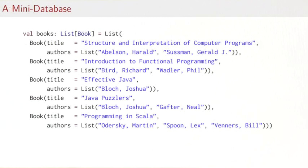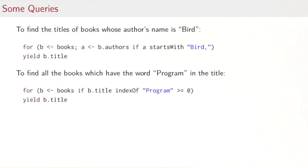Now that we have this database, let's run some queries over it. The first query would be to find the titles of books whose author's name is Bird. A query like that could be written like you see here: we let b range over books, we let a range over the authors of book b.